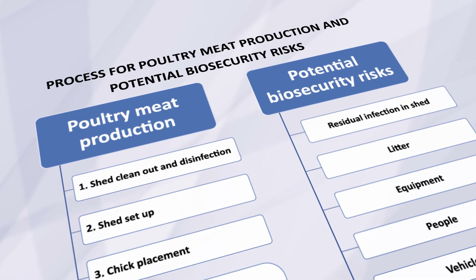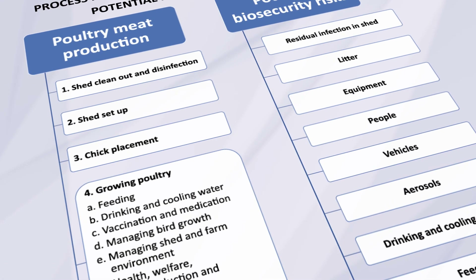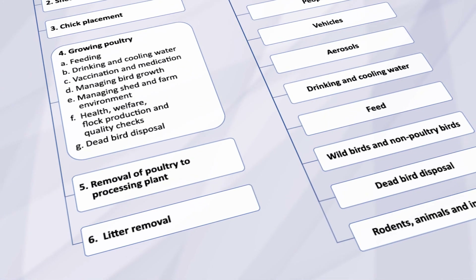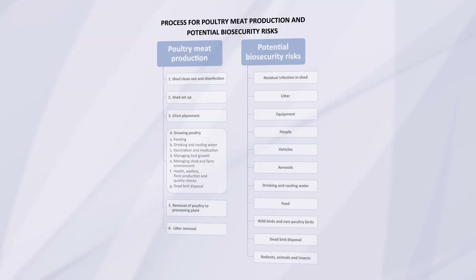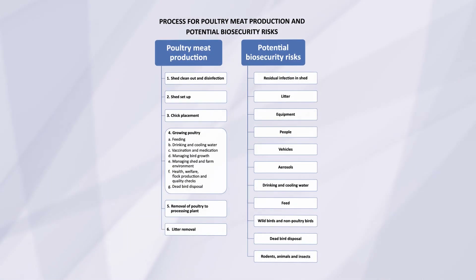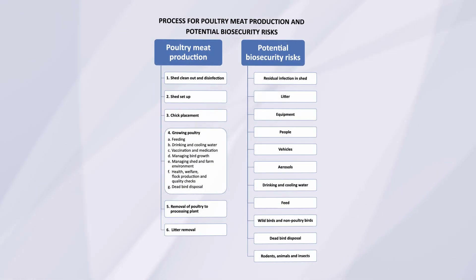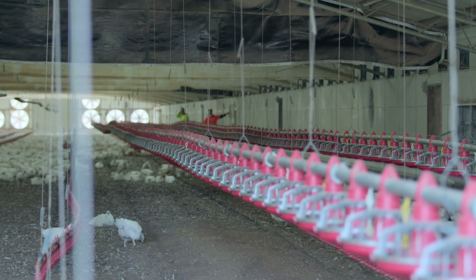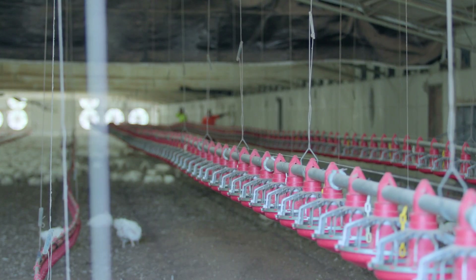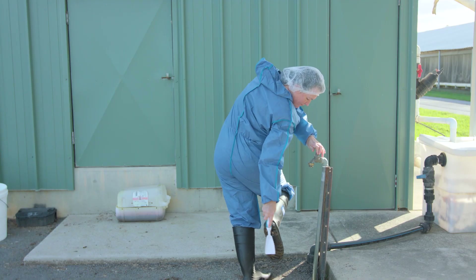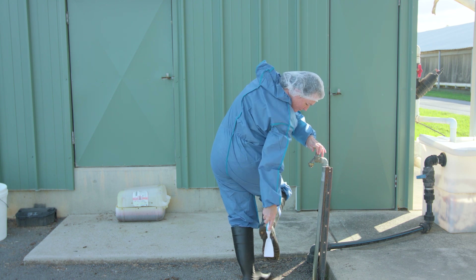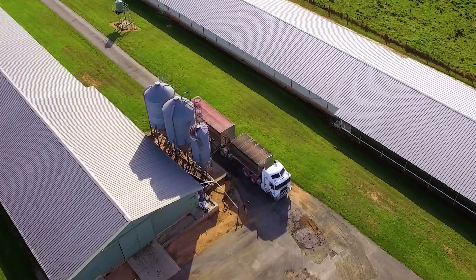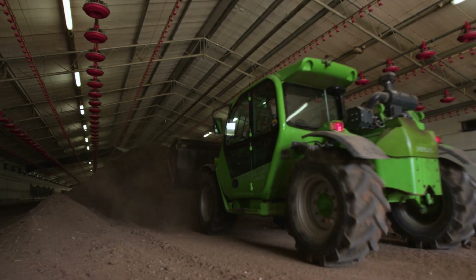Poultry meat production has several process stages and biosecurity risks can occur in each stage. The potential for disease to enter or exit the property represents the greatest risks. The main ways that pathogens spread is through contaminated people including clothing and shoes, contaminated vehicles and equipment, and contaminated litter.